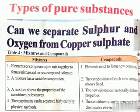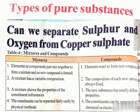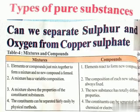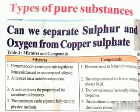Now we will discuss about types of pure substances. So far we have studied about mixtures — substances whose components can be separated by physical methods. What about substances that cannot be separated further by any method of separation? We call these pure substances.